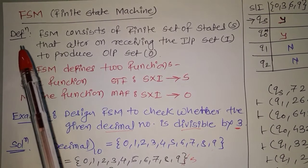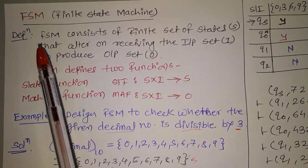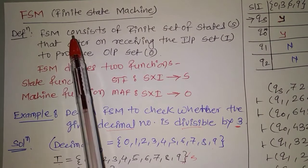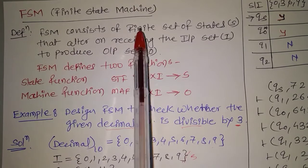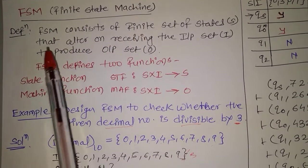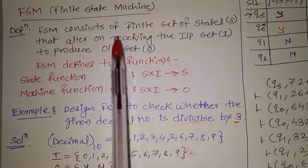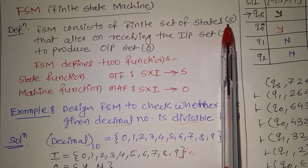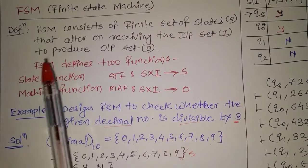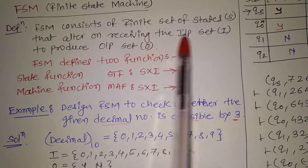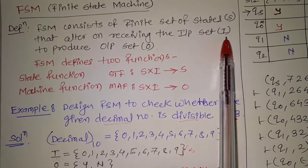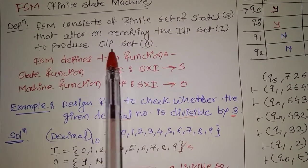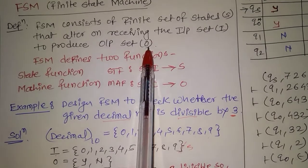Today's topic is FSM. FSM means finite state machine. FSM consists of a finite set of states S that alter on receiving the input set I to produce output set O.